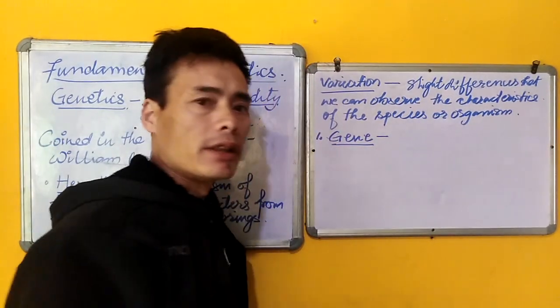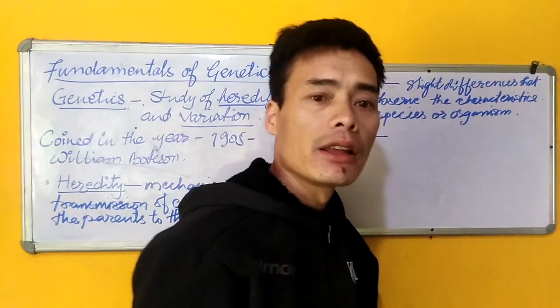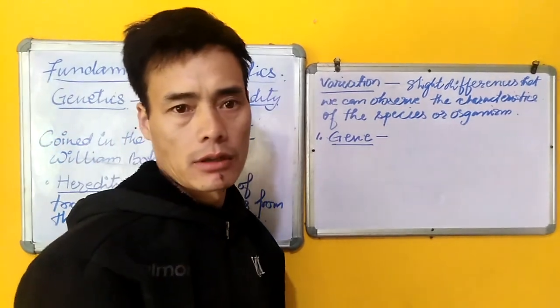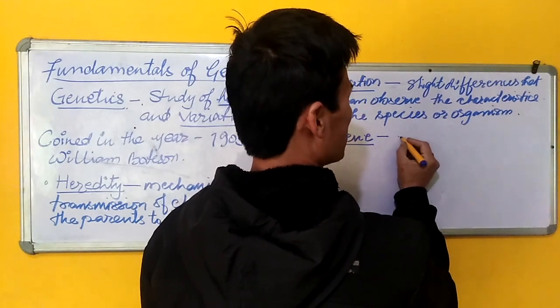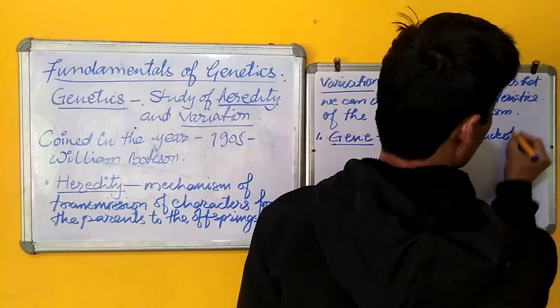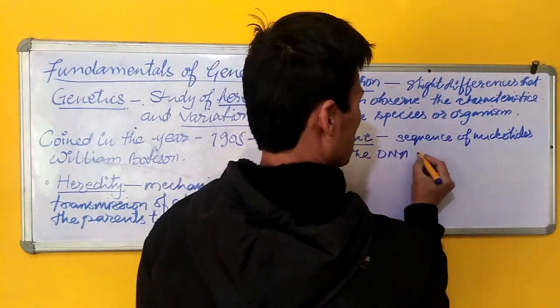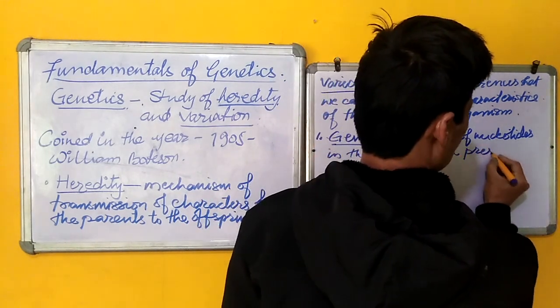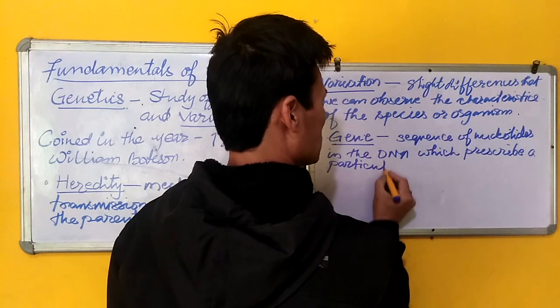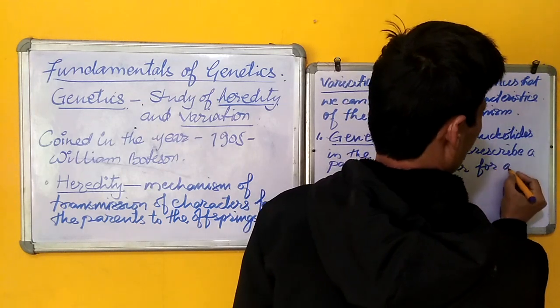We know very well that the gene is nothing but the sequence in the DNA, which helps to give a particular character to an individual. By definition, gene is nothing but the sequence of nucleotides in the DNA, which prescribes a particular character for a species.